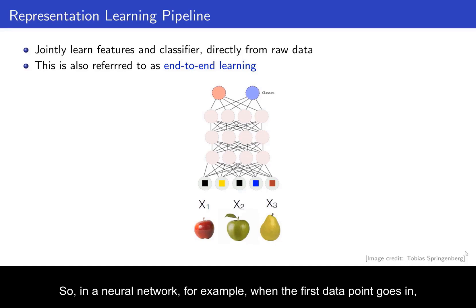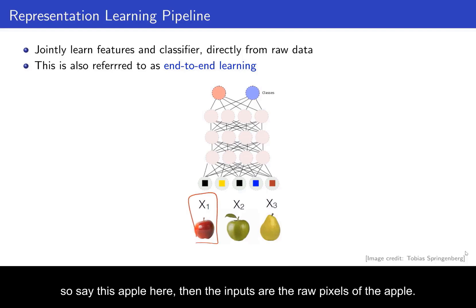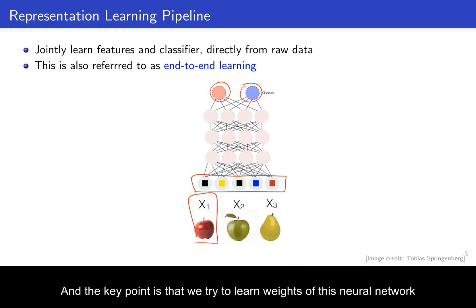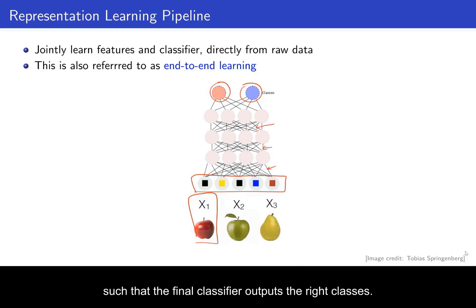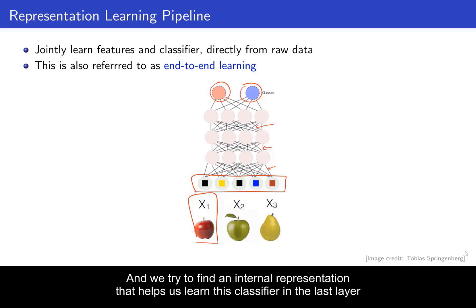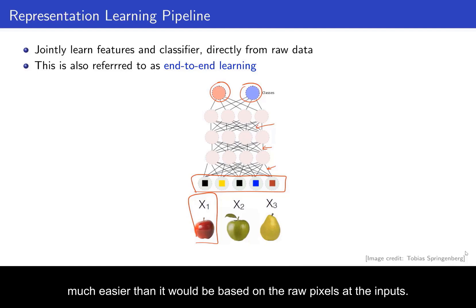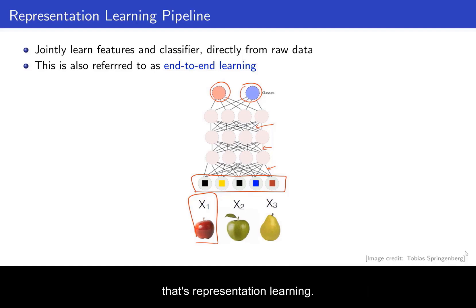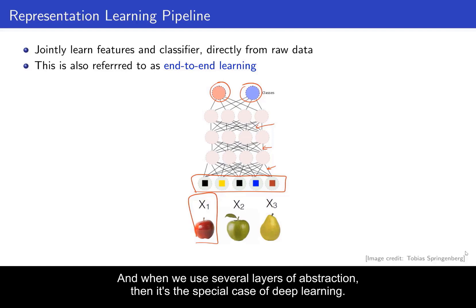In representation learning, we don't want to assume that a domain expert creates features for us. Instead, we want to learn them directly from the raw data jointly with learning a classifier, all in an end-to-end fashion. In a neural network, the inputs are the raw pixels of an image and the outputs are the probability that the image is classified as an apple or a pear. We learn the weights of the neural network to find an internal representation that helps learn the classifier much more easily than from raw pixels. Learning these internal representations across layers is representation learning, and when we use several layers of abstraction, that's deep learning.